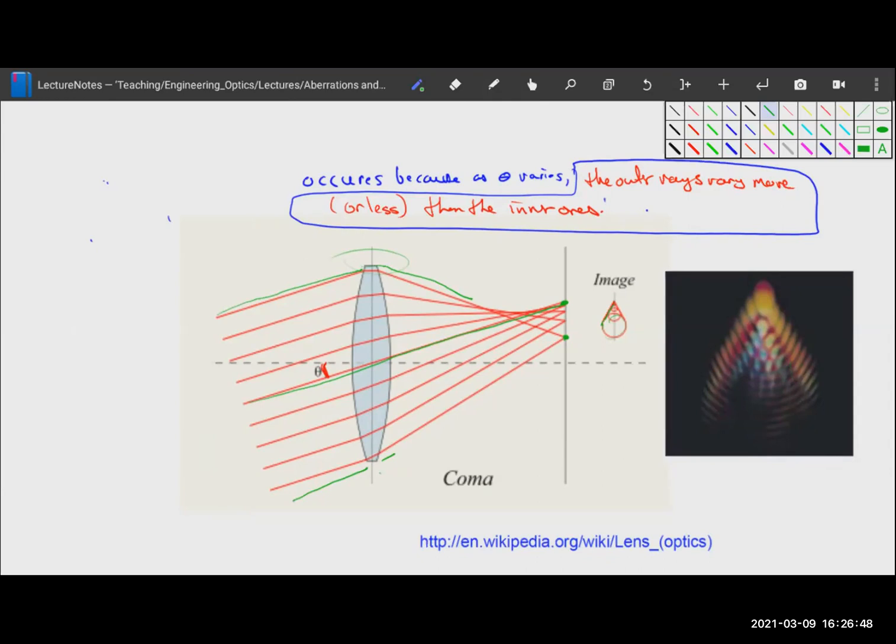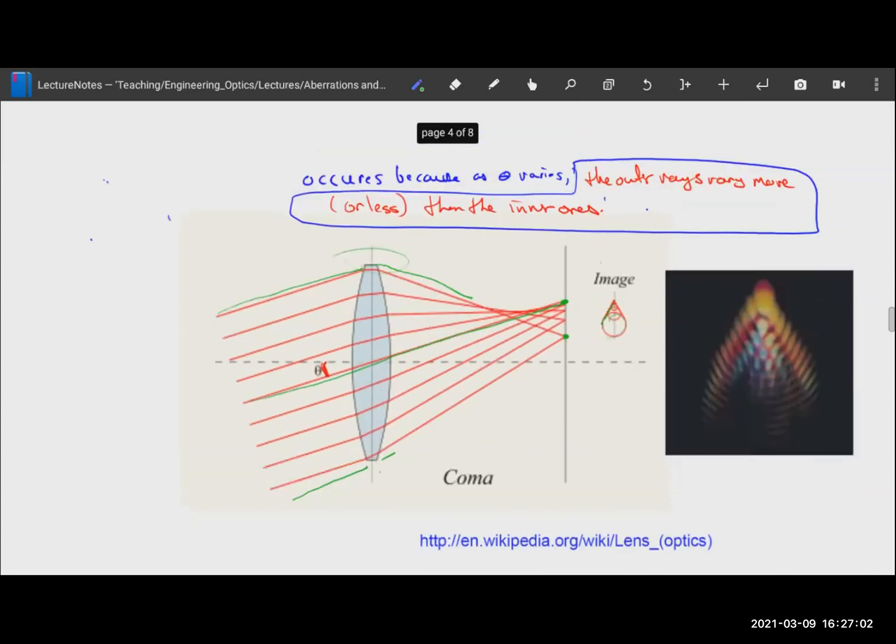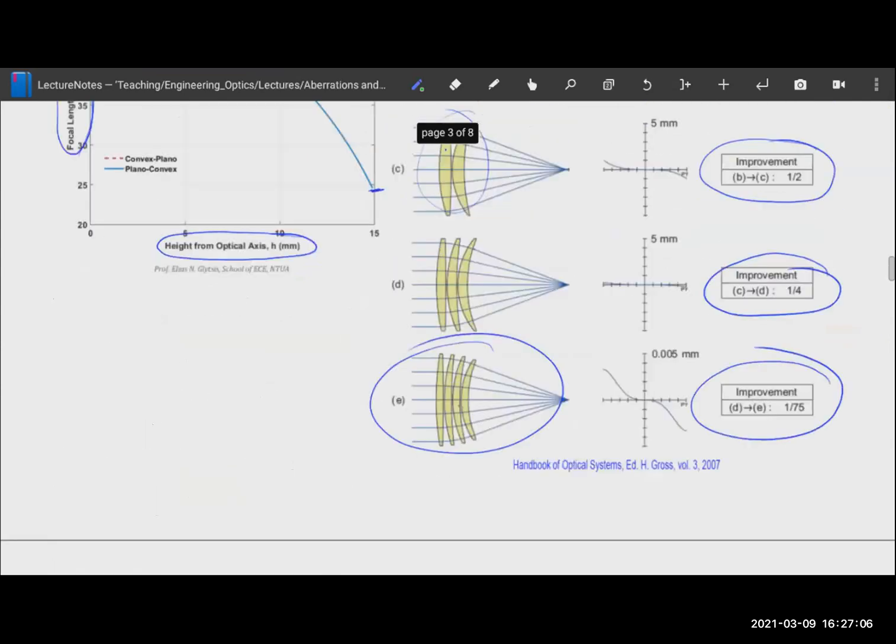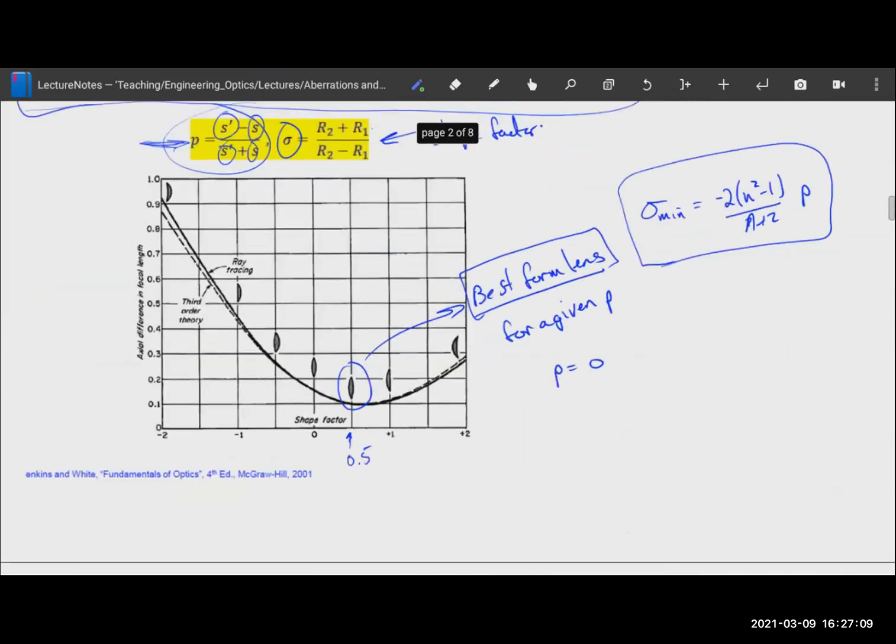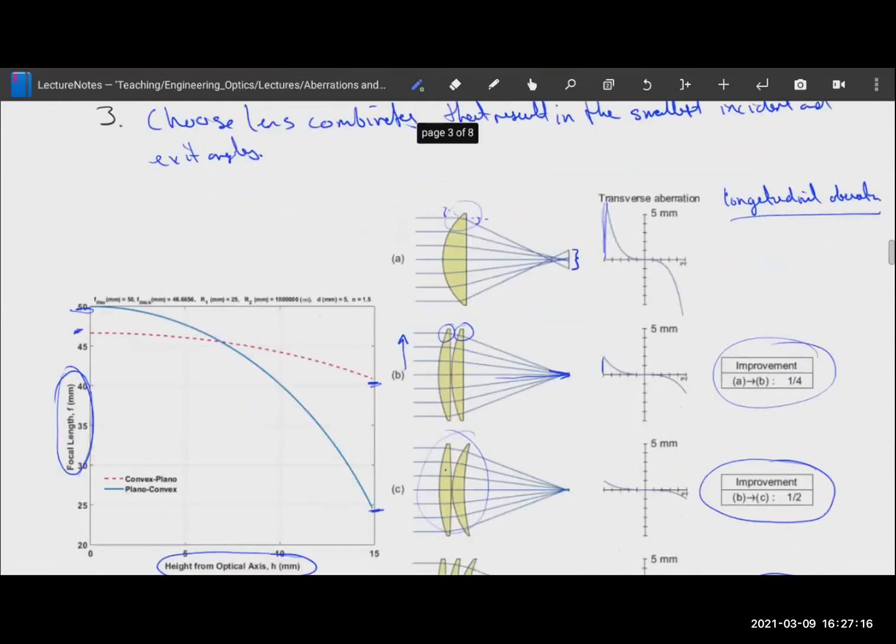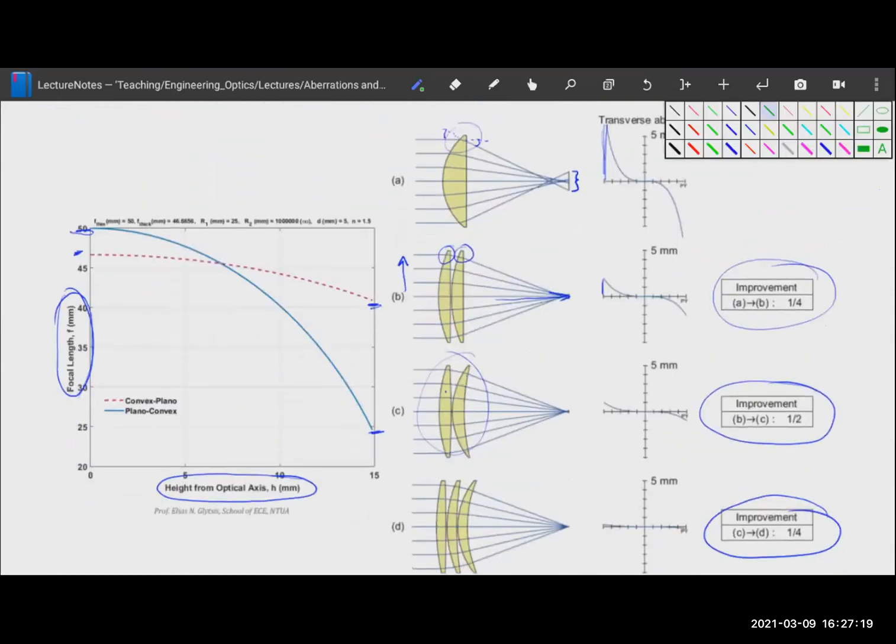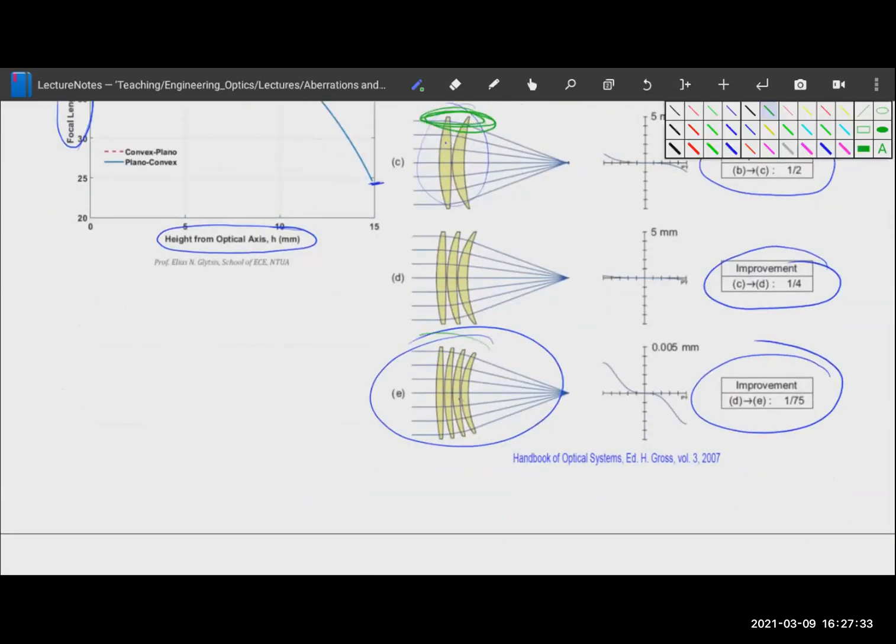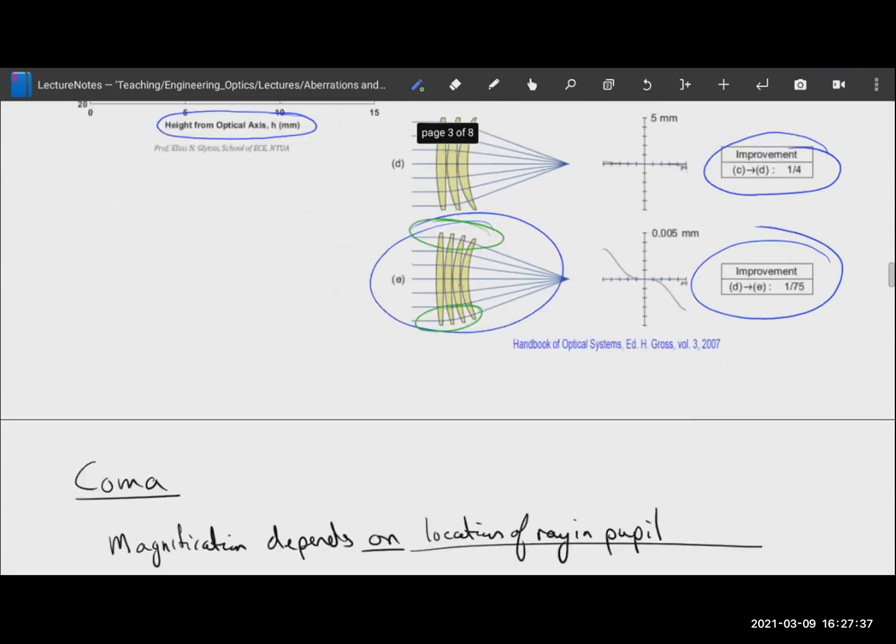Coma is mostly corrected using the same techniques as spherical aberration. When you use a best form lens, which we talked about, a best form lens is also going to be close to the minimum for coma. It's not going to be exactly the same, but it's pretty close. Also the same techniques that minimize the angles that the rays make with the interfaces are going to minimize the coma because coma occurs because of that non-linearity. So this design here is going to have much, much lower coma in addition to having much, much lower spherical aberration.